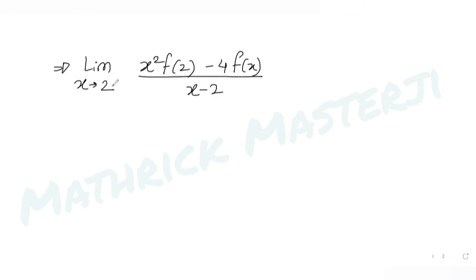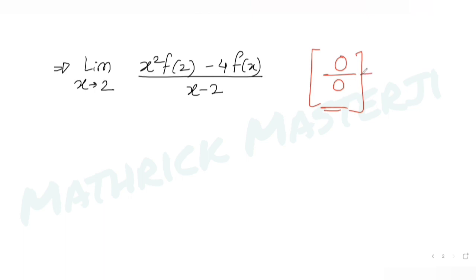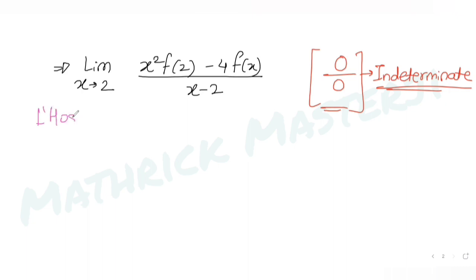If I substitute x = 2 into the numerator, I get 2² f(2) − 4f(2) = 4f(2) − 4f(2) = 0. The denominator becomes 2 − 2 = 0 as well. So the limit is in the indeterminate form 0/0, which means I can apply L'Hôpital's rule.